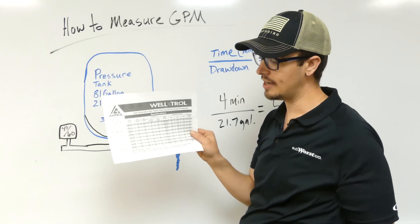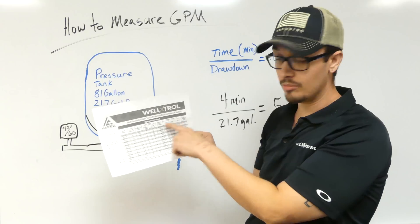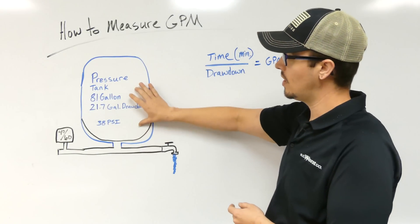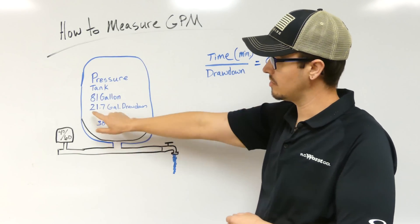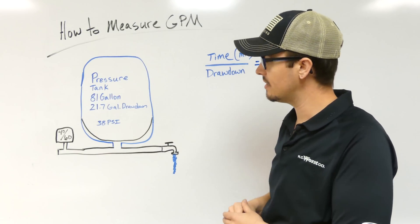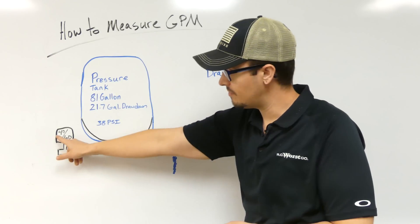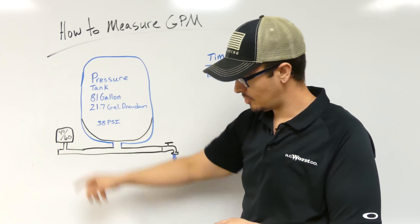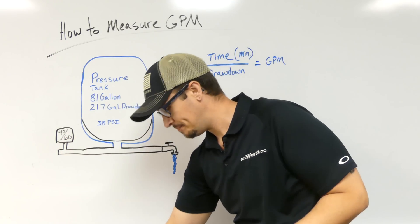It gives you a generic idea of what your drawdown is going to be at the different pressure ratings. So this would be a Well-X-Trol tank in this example. You have a 21.7 gallon drawdown on a 40 to 60. This is my pressure switch.